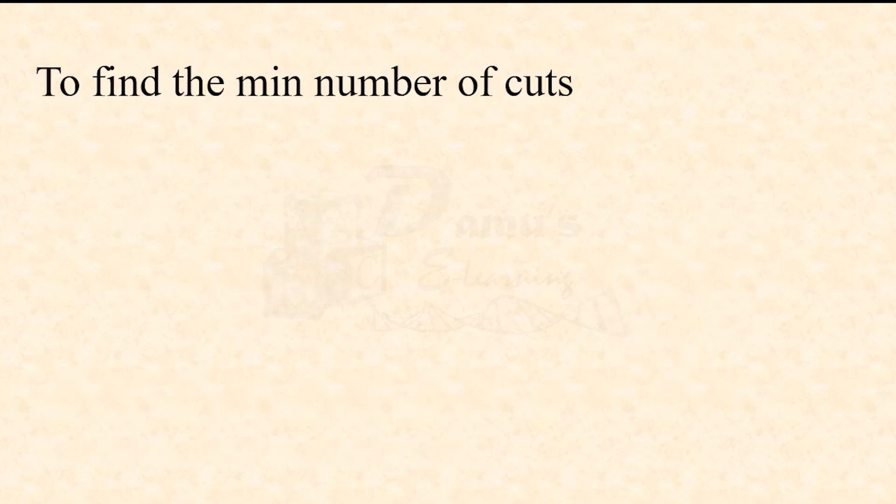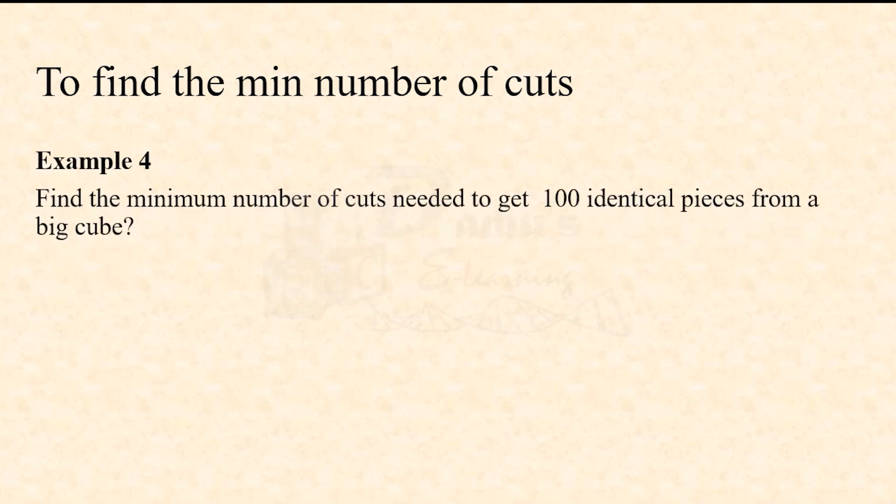Example 4 is a similar type. Find the minimum number of cuts needed to get 100 identical pieces from a big cube. This 100 we have to divide and write as product of three consecutive numbers. The factors of 100 that are close to each other are 5, 5, and 4, so 5×5×4. Five pieces means 4 cuts, therefore 4+4+3 equals 11 total. Minimum number of cuts required is 11.